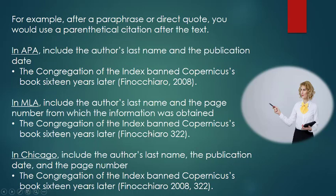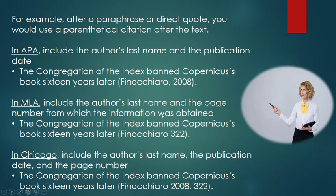In MLA, you would have the author's last name followed by the page number where you got the information from. In Chicago style, it's a combination of both — the author's last name, the publication date, a comma, and a page number. There may be many variations on these formulas based upon the type of information source you're using, like an academic journal, a newspaper, or a book. Exploring all those variations goes beyond the scope of this presentation. A great resource is the Purdue Online Writing Lab, which will help you create these parenthetical citations.